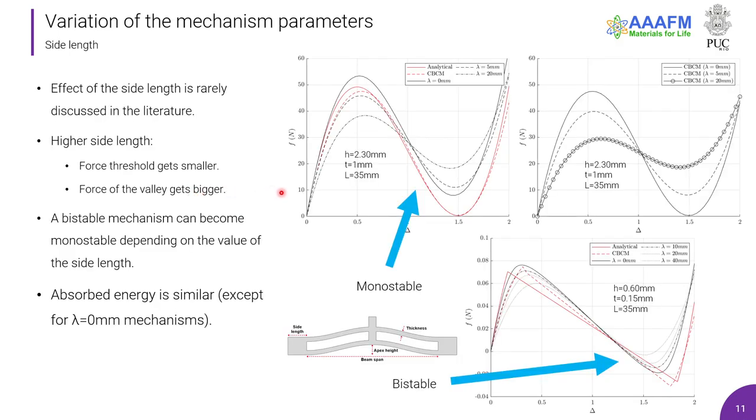The first parameter we studied was the side length, once it's rarely discussed in the literature. To sum up, when the side length gets bigger, the force threshold gets smaller, and the force of the valley gets bigger. As we can see here in the first image, the mechanism with side length of 5 and 20 mm have force in the valley higher, and the maximum force is getting lower.